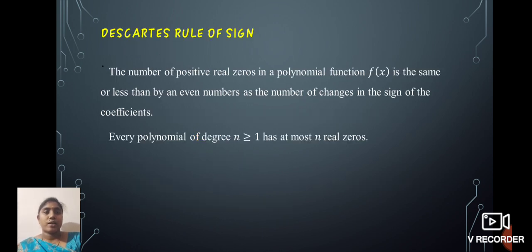Next, we define Descartes' rule of sign. The number of positive real zeros in a polynomial function f(x) is the same or less than by an even number as the number of changes in the sign of the coefficients. Every polynomial of degree n ≥ 1 has at most n real roots.